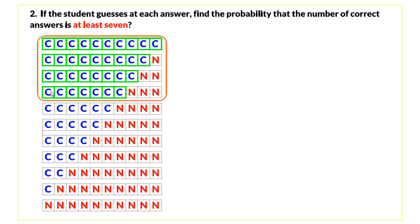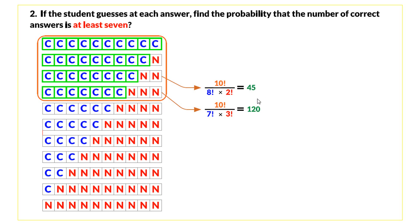We now count the elements in each event using the permutation formula for identical items. For exactly 7 correct answers out of 10, we get 120 elements. For exactly 8 correct answers, we apply the formula and get 45 elements. For exactly 9 correct answers, we get 10 elements. For exactly 10 correct answers, there is only one possible outcome.